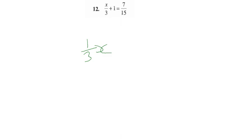So it's easier to find the inverse. Plus 1 equals 7 divided by 15. First, we move the 1 to the other side, so it becomes minus. Plus becomes minus. So (1/3)x equals 7/15 minus 1.